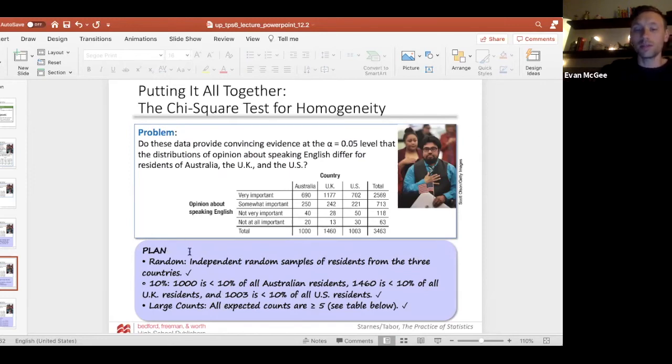Another thing in the plan section that I don't have listed is we need to list the name of the test. So in this case, we would say this is a chi-square test for homogeneity. To calculate expected counts, you multiply the row total by the column total divided by the table total. For this first one, I'm going to do 690 times 2569 divided by 3463.